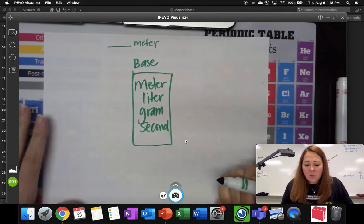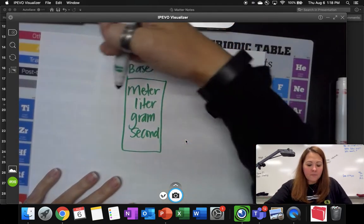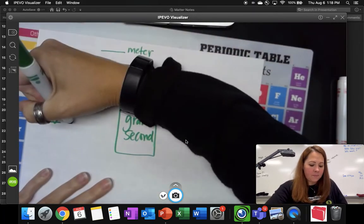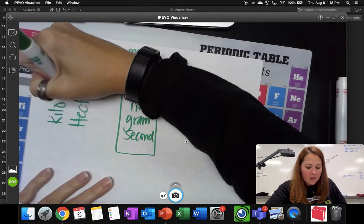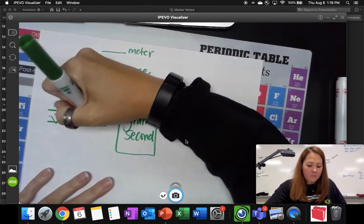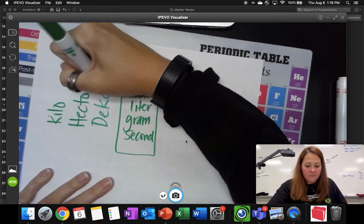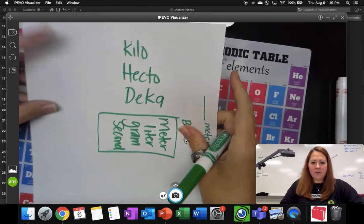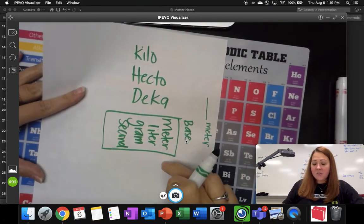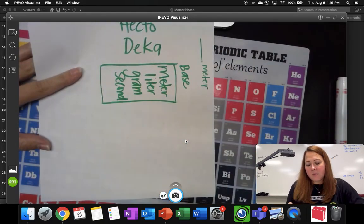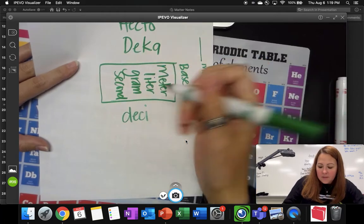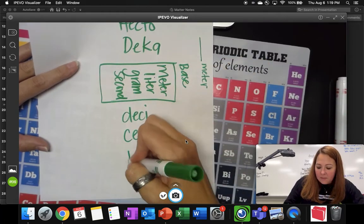So with your base units, in order, the larger of them, you have a kilo, hecto, and deca. Let me write this this way so you guys can see it a little bit better. The smaller units, when you want to make them tinier, you have desi, centi, and milli.